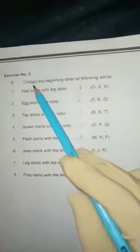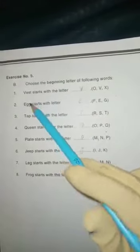Now page number 9. Exercise number 5: Choose the beginning letter of the following words. In this case, you have given some words which you have to find in your options. So the word beginning letter is first into blanks. Vest starts with the letter, and the options are O, V, and X.